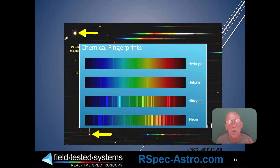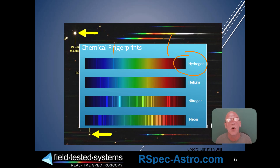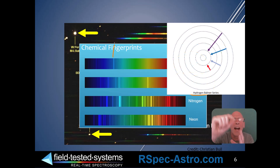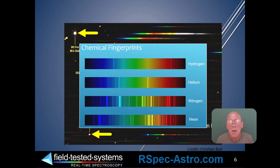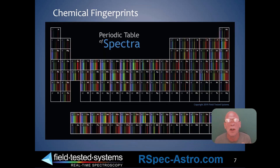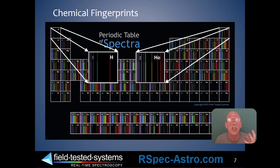Each element, when we burn it or when light passes through it, has its own fingerprint. This hydrogen here, we can see that its lines are here and here. What are called the Balmer lines are very different than the lines we see on helium. How are those lines created? As electrons jump around in the Bohr model between orbitals, they give off or absorb light — that's all we need to know. This is actually a poster we offer to teachers, a 36 by 24 inch poster, to show that each element really does have a different fingerprint.